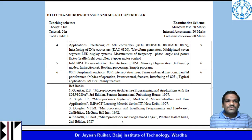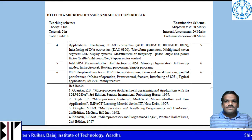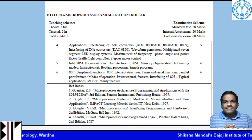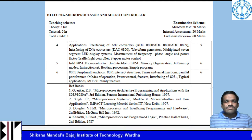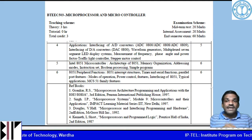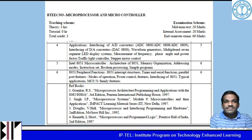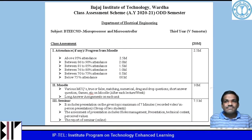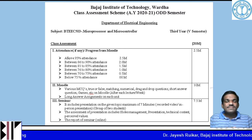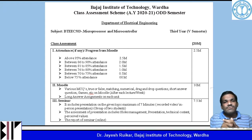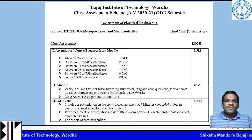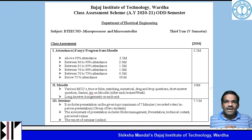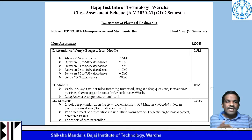Now let us talk about the examination scheme. The midterm exam is 20 marks, internal assessment is 20 marks, and the end semester exam is 60 marks. The mid semester and end semester exams are conducted by the university. For the internal assessment, there is a class assessment scheme totalling 20 marks: attendance or Moodle progress carries 2.5 marks; Moodle activities including MCQs, true or false, numerical, drag and drop, short answer questions, and long answer assignments carry 10 marks; and a seminar presentation carries 7.5 marks.